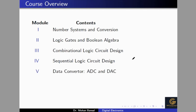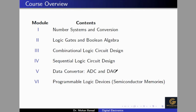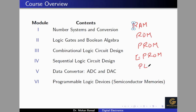After that we will see data converters. In real time we have analog data, but for digital processing we require digital signals, so we use analog to digital converters (ADC). Similarly on the receiving side we require digital to analog converters (DAC). We will cover both ADC and DAC. After this, we will cover programmable logic devices and semiconductor memories like RAM, ROM, PROM, and EPROM. In programmable logic devices we will cover PLD, PLA, PAL, and PROM.